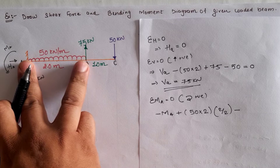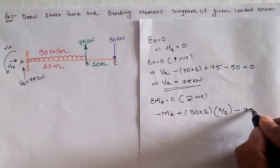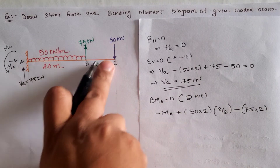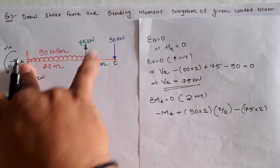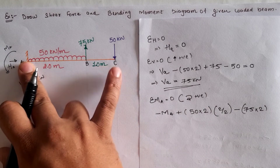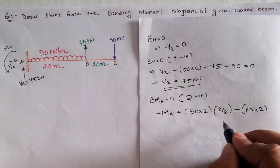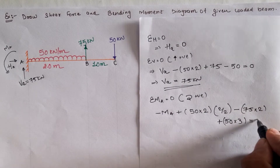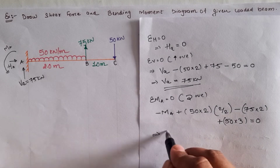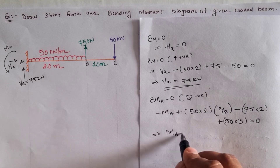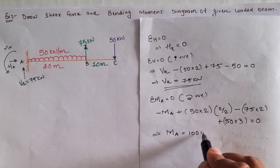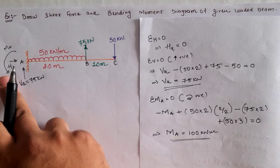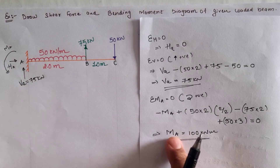The moment due to 75 kN load is negative 75 times 2 (its distance from A). The 50 kilonewton downward load creates a clockwise moment at A; its total distance is 2 + 1 = 3, so the term is positive 50 times 3. Setting the sum equal to zero and solving gives the moment at A equal to 100 kilonewton meter. The positive value confirms our assumed direction is correct.